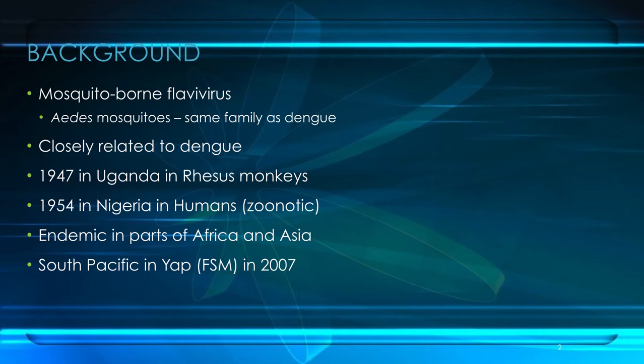Since it was first identified and isolated in humans in the 1950s in sub-Saharan Africa, Zika virus has become endemic in many parts of Africa as well as Asia. Here in the Pacific, and in particular the South Pacific, it was first identified after an outbreak in the Yap Islands of the Federated States of Micronesia back in 2007.